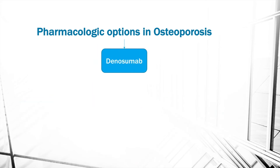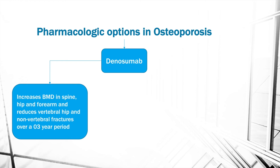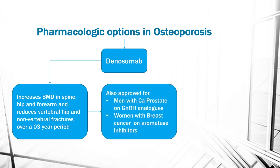The next pharmacological option is the RANK ligand inhibitor denosumab, which increases BMD in the spine, hip, and forearm, and reduces vertebral, hip, and non-vertebral fractures over a three-year period. It is also approved for men with prostate carcinoma on gonadotropin-releasing hormone analogs and women with breast cancer on aromatase inhibitors.